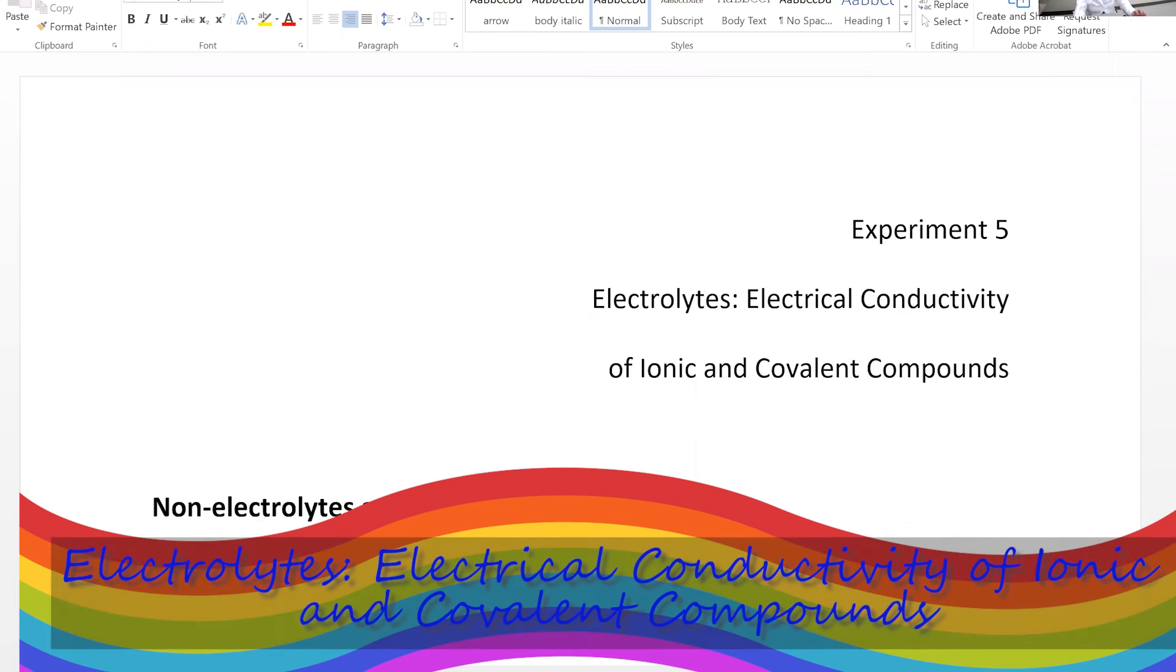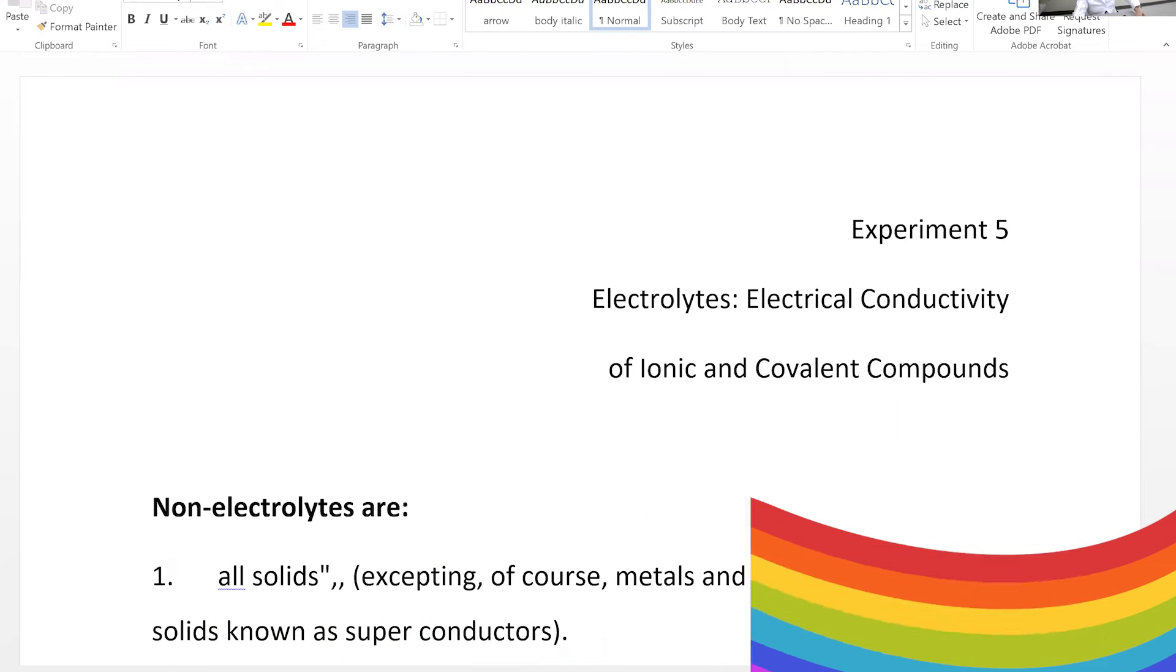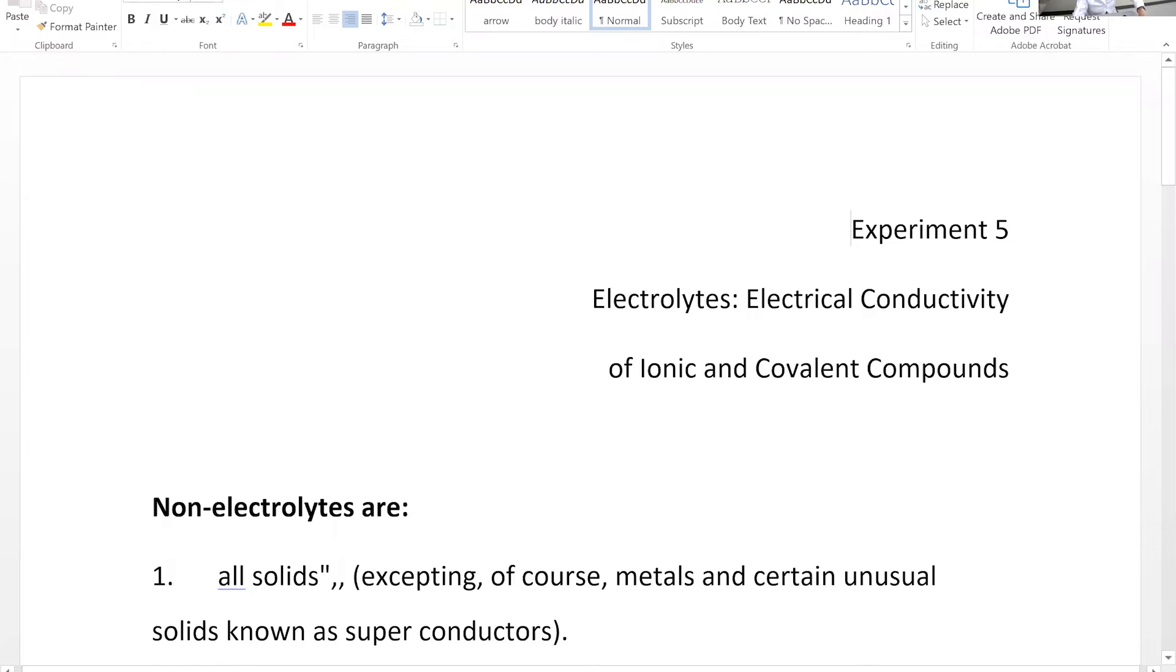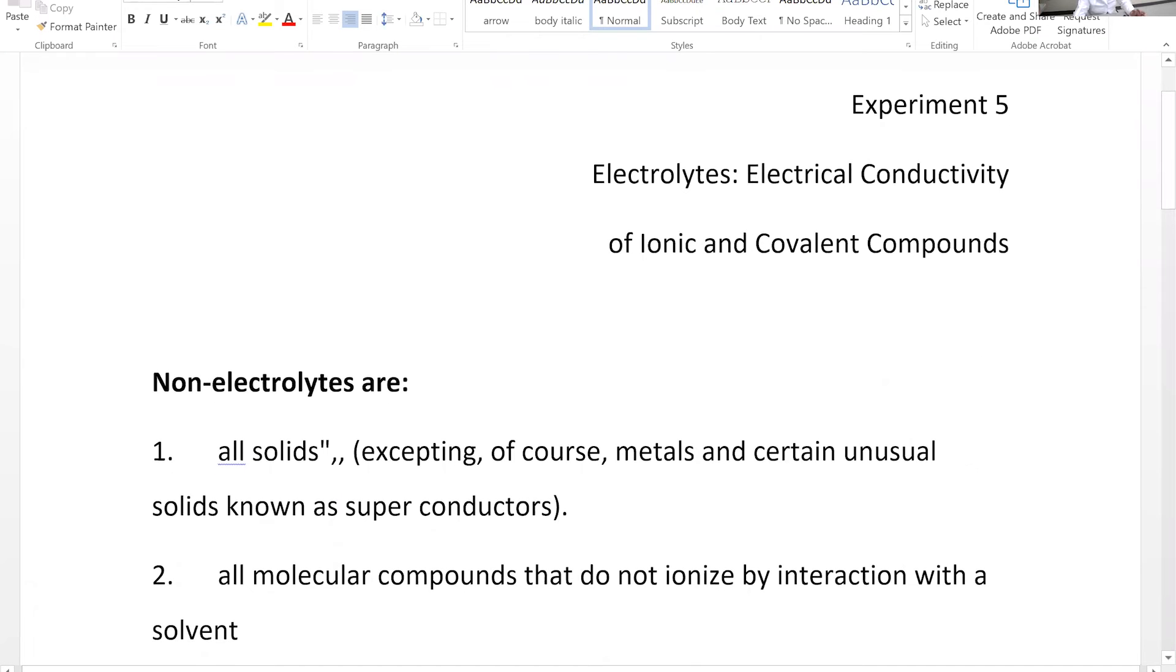Pre-lab discussions for experiment 5, which is electrolyte or electrical conductivity of ionic and covalent compounds. What is electrolyte? Electrolyte is a substance that conducts electricity, so we are studying the conductivity behavior of different substances in this experiment.